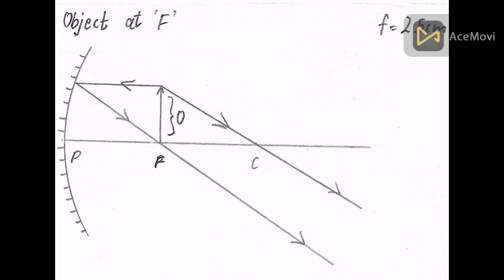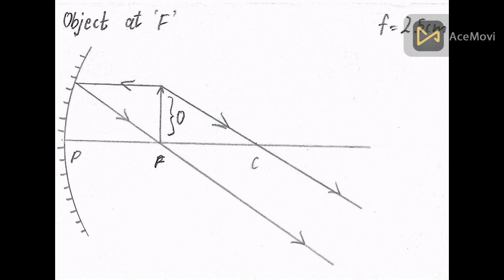When the object is placed at the focal point, the position of the image is at infinity, and because the image is at infinity, we don't have any more information about it.